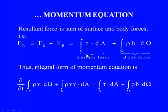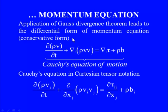Body forces arise from gravitational attraction, electromagnetic fields, or similar long-range forces, while surface forces arise from contact with different media or solid boundaries. Substituting these force expressions gives the integral form of the momentum equation: ∂/∂t(∫_CV ρv dΩ) + ∮ρvv·dA = ∮τ·dA + ∫_CV ρb dΩ.